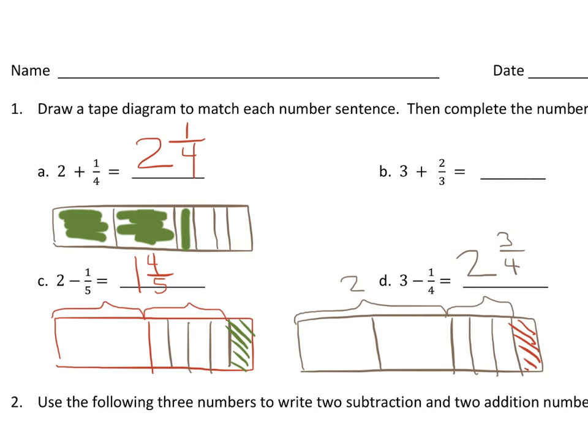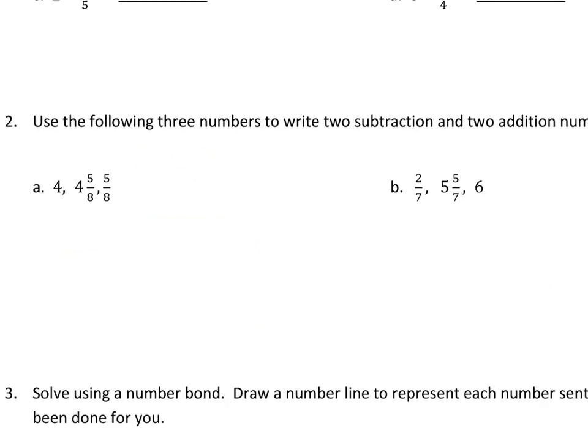Now, in the next section, how other numbers relate to one another with adding and subtracting, they want you to create two subtraction and two addition number sentences. Or, like we used to call them, fact families. So, for example, you would take the largest number, and you would take that number twice, and you would subtract it from the other numbers. So if I lost five-eighths, I would have four left over. If I lost four, I would have five-eighths left over.